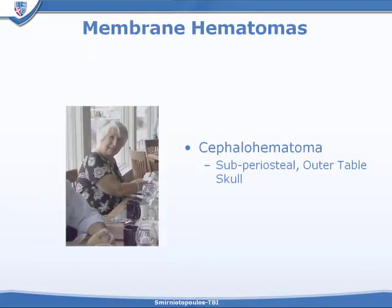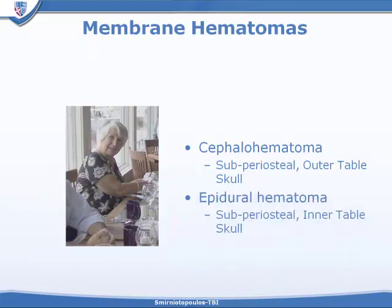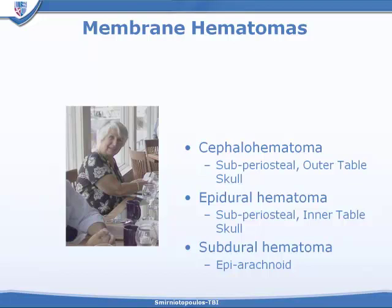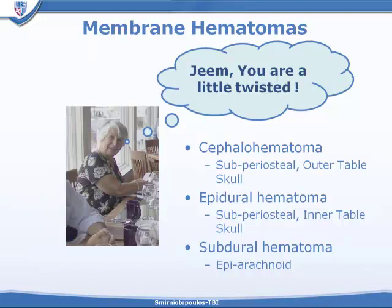In discussing membrane hematomas: a cephalohematoma is a subperiosteal hematoma for the outer table of the skull. An epidural hematoma is also a subperiosteal hematoma, but related to the inner table of the skull. A subdural hematoma is actually located in the space between the dura and the arachnoid — it is over the arachnoid, so it is an epiarachnoid hematoma. My mother, a retired pathologist, said I was a little twisted for thinking about it this way.